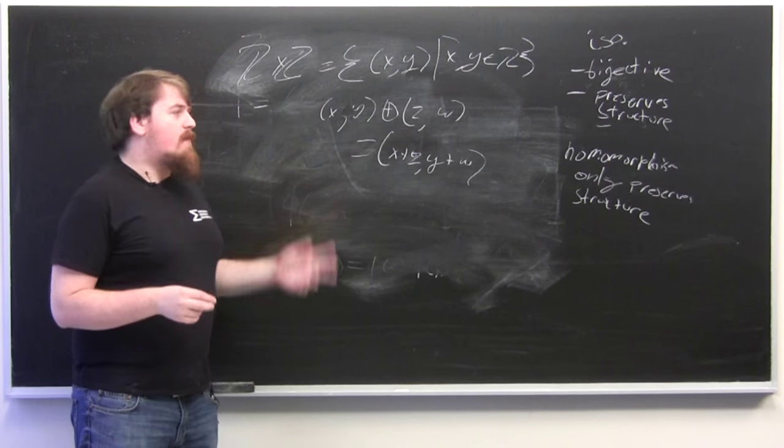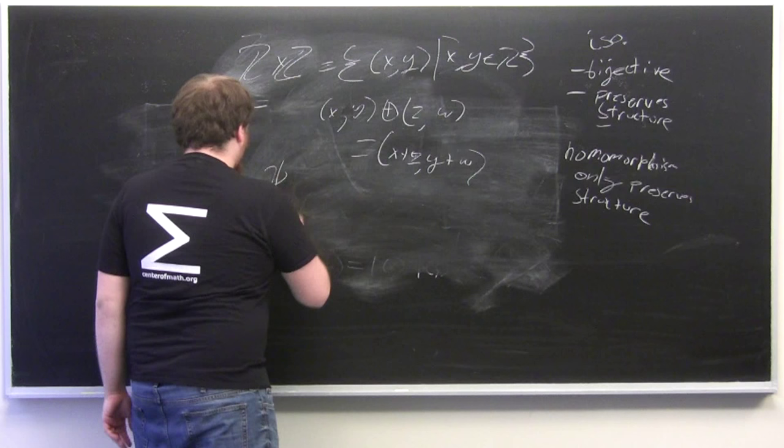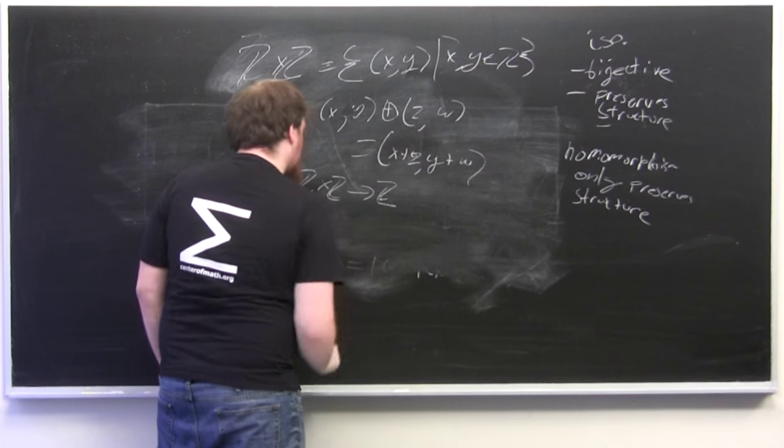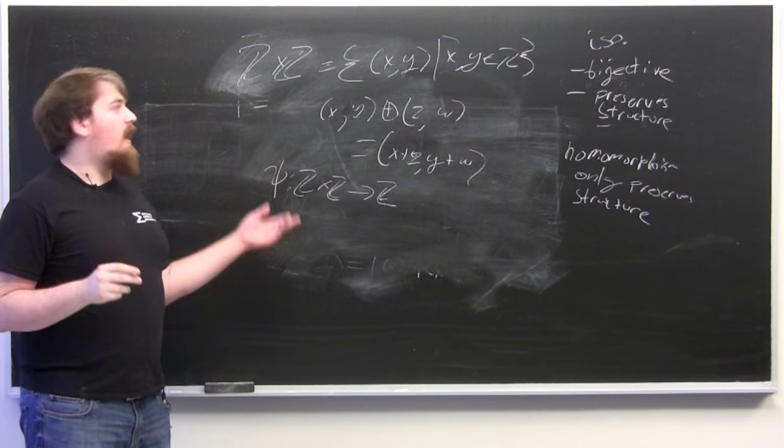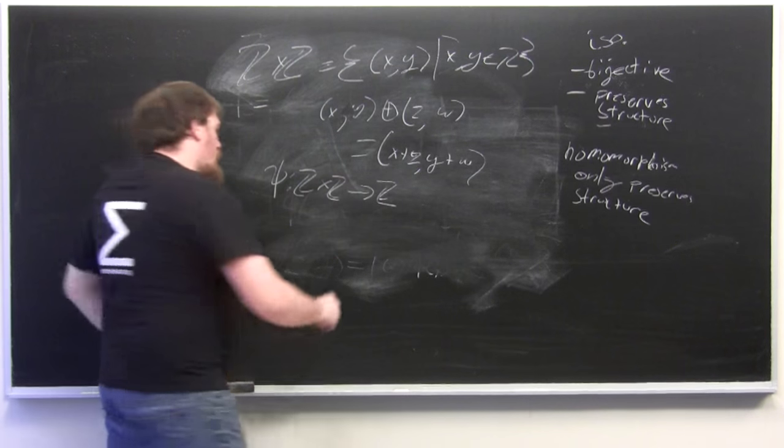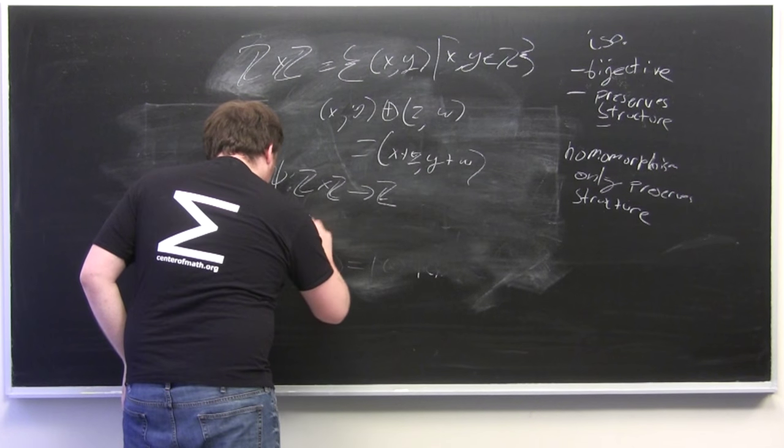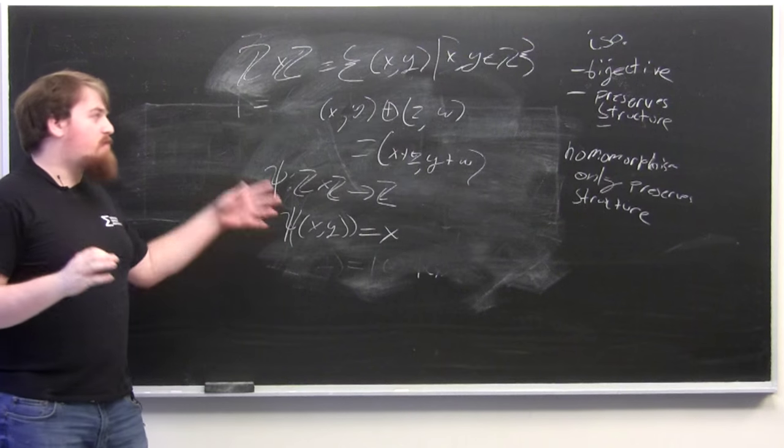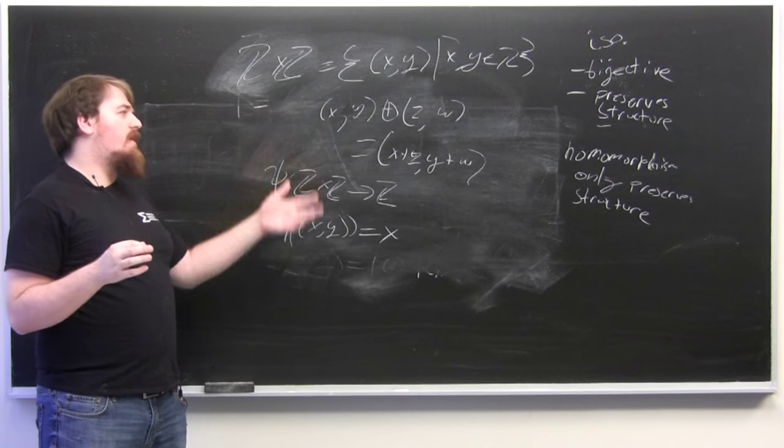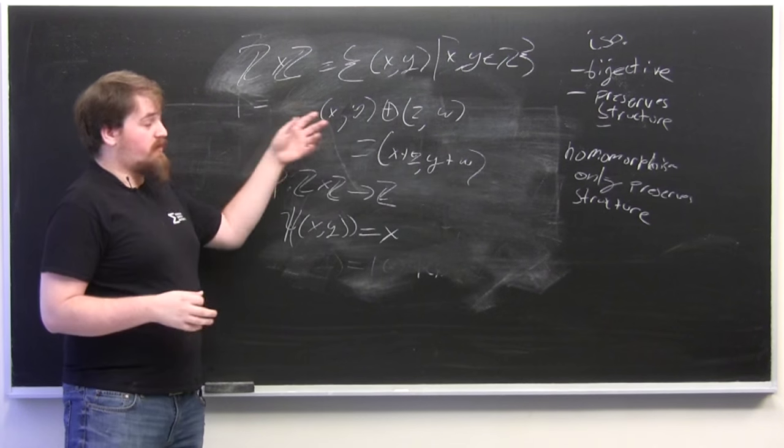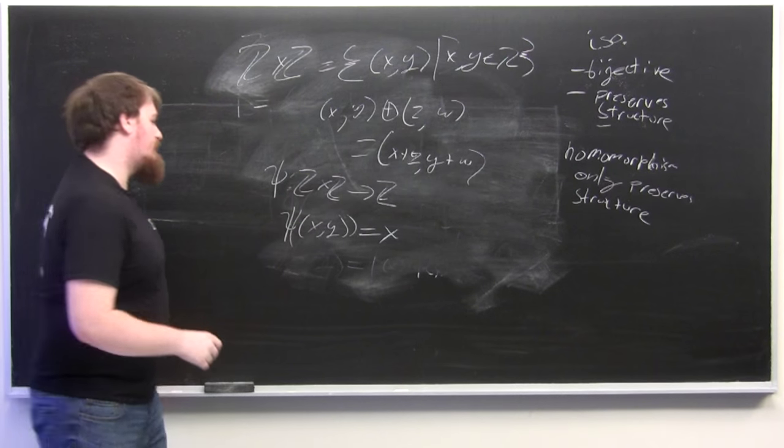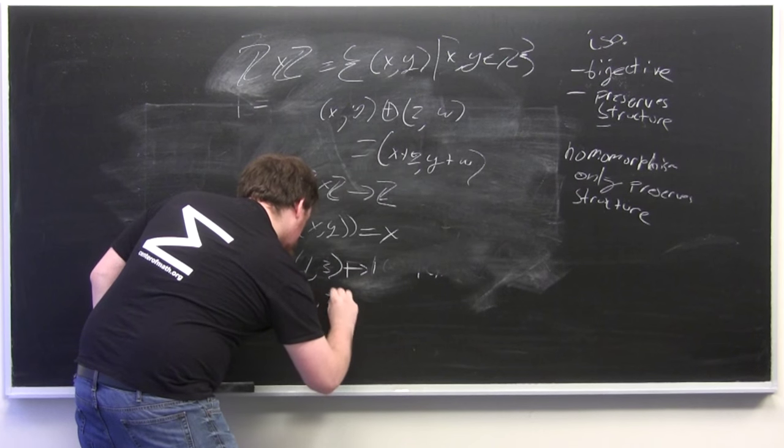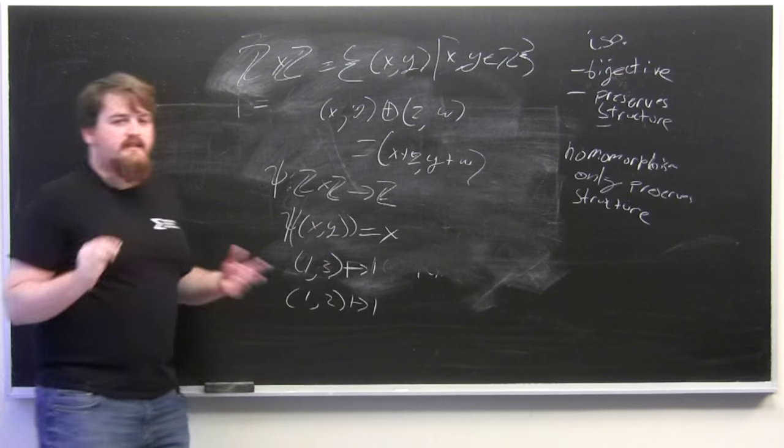So this is a group and we can make a map, call it psi, which has domain of Z times Z and co-domain of Z which sends every pair to its first component. Since every element in Z can be the first component of one of these pairs, this is going to be onto but it's not one-to-one because it sends both (1,1) and (1,5) to the number one.